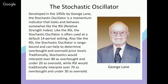The stochastic oscillator was developed in the 1950s by George Lane. It is a momentum indicator that behaves somewhat like the RSI, or Relative Strength Index. Like the RSI, the stochastic oscillator is often used at a default 14-period setting, is range-bound, and can help determine overbought and oversold price levels. Traditionally, stochastics interpret over 80 as overbought and under 20 as oversold, while RSI uses over 70 as overbought and under 30 as oversold.